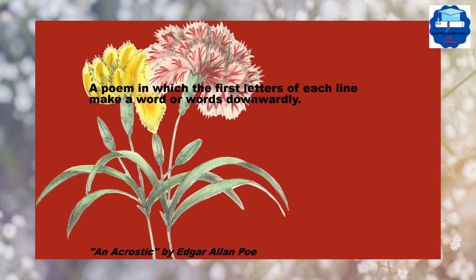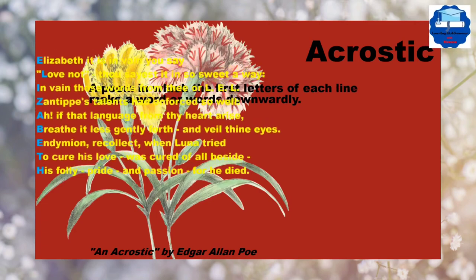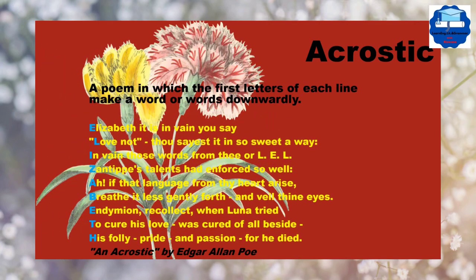Acrostic is a poem in which the first letters of each line make a word or words downwardly. You can see in this instance, the initial letter of each line makes a word — 'Elizabeth' — when we read it downwardly.